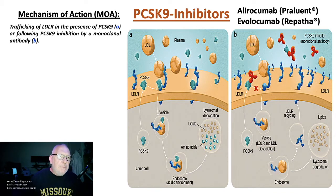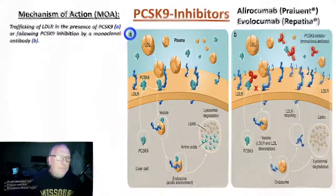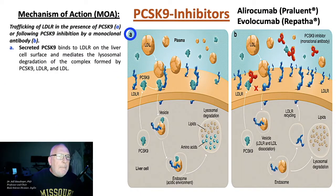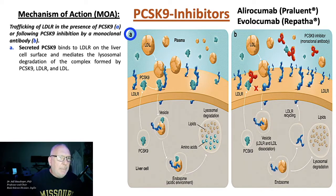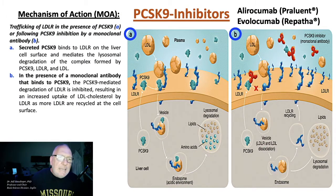To demonstrate that, I'm going to use this figure. In condition A, secreted PCSK9 binds to the LDL receptor on the liver cell surface and mediates the lysosomal degradation of the complex formed by PCSK9, the LDL receptor, and low-density lipoprotein. That whole complex gets internalized and degraded in the lysosome. In condition B, an inhibitory monoclonal antibody binds and sequesters PCSK9, preventing it from forming this complex — so degradation of the LDL receptor is inhibited.